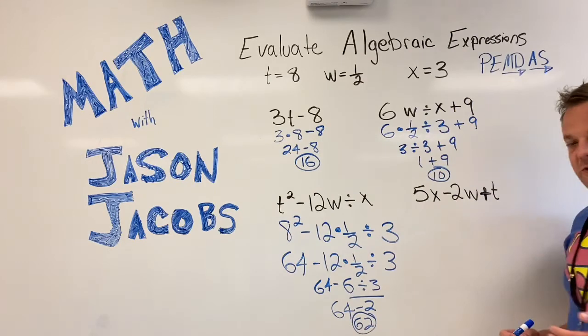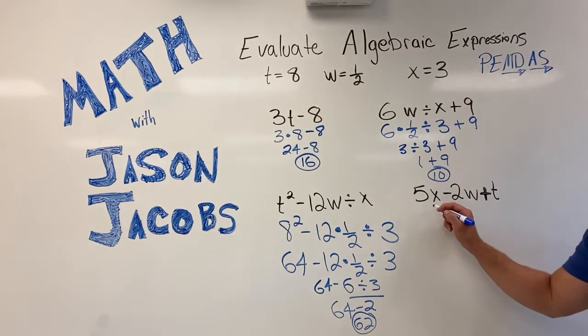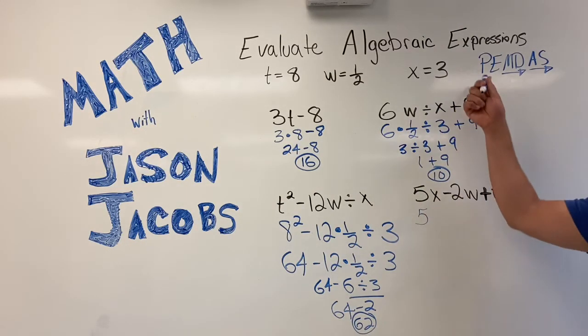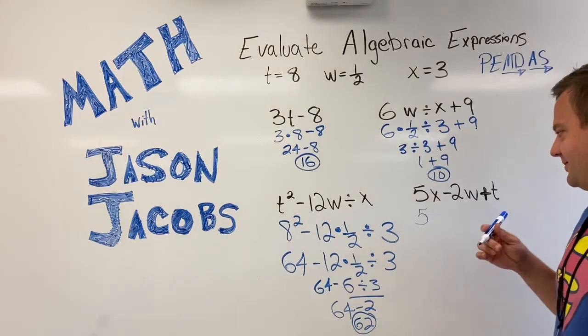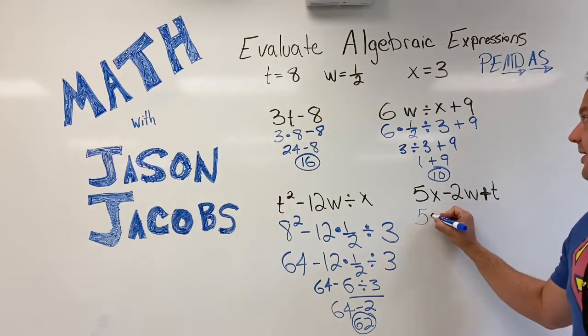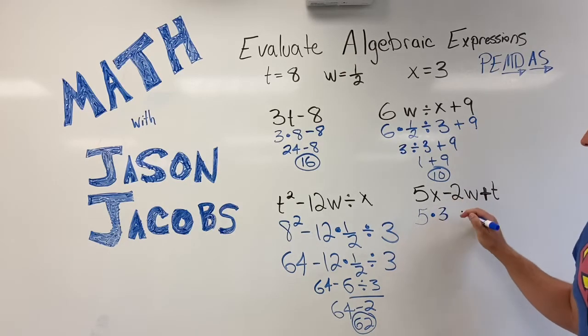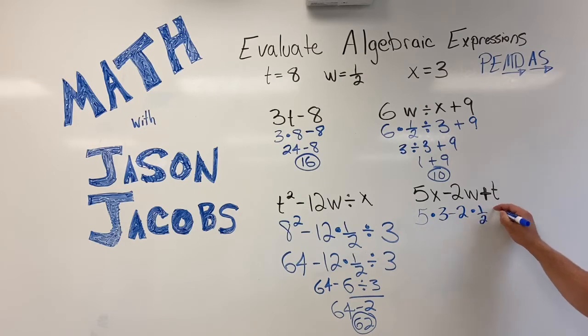Pause the video. Give this one a try. All right. First things first. I'm going to substitute these values in. Substitute because that's what we do. You'll see that a lot. So 5 times 3, x is 3, minus 2 times 1 half plus t is 8.